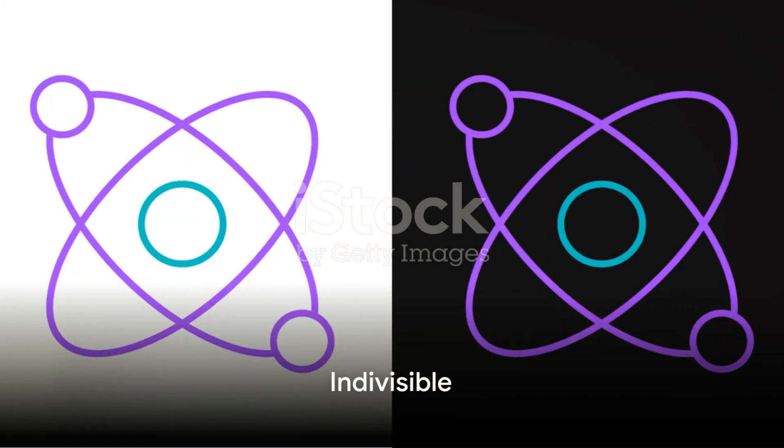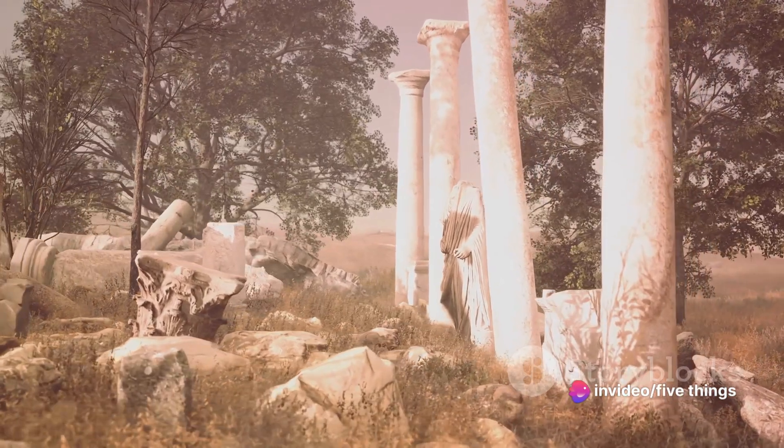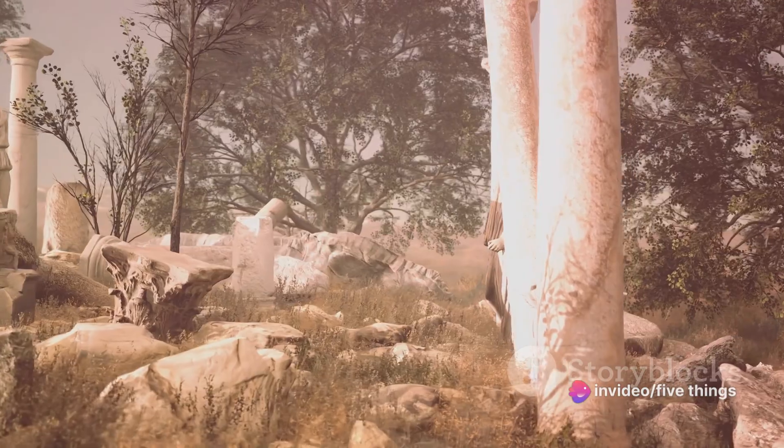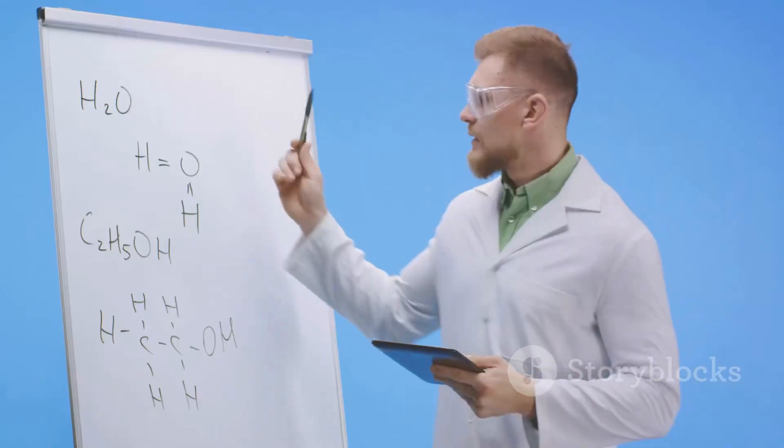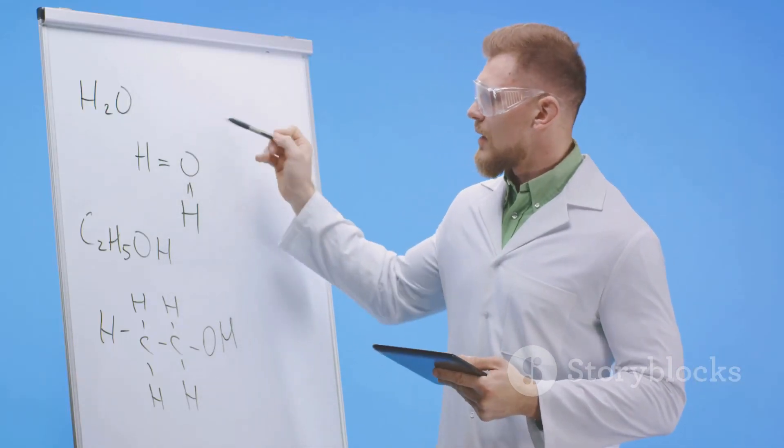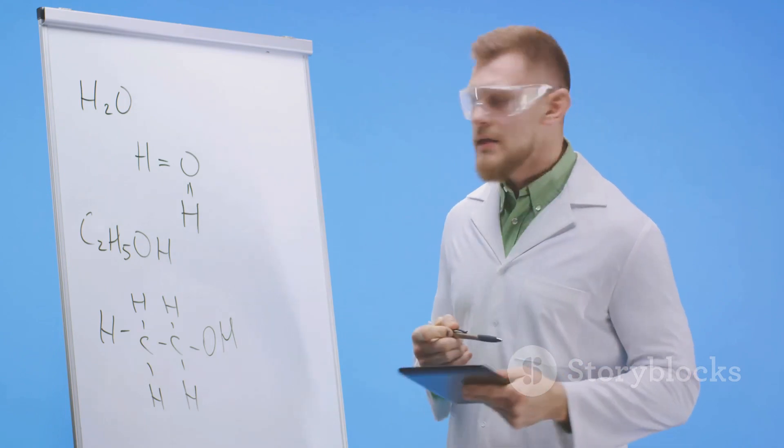Number two on the list, the term atom comes from a Greek word meaning indivisible. The ancient Greeks proposed this concept, envisioning atoms as the tiniest, unbreakable chunks of matter. However, we now know atoms can be split further into protons, neutrons and electrons.